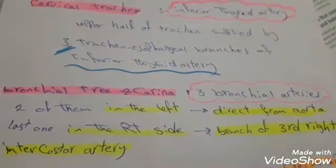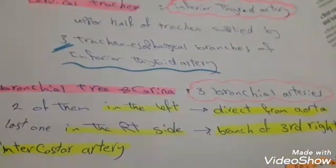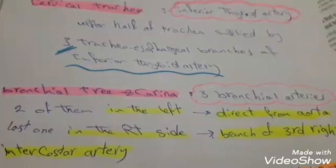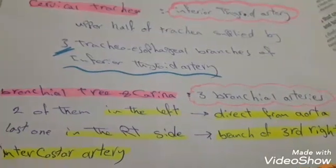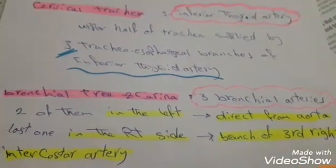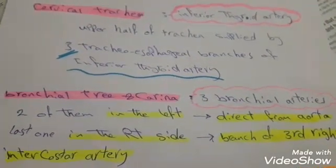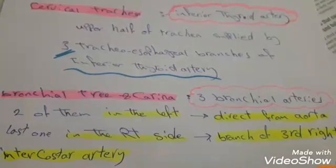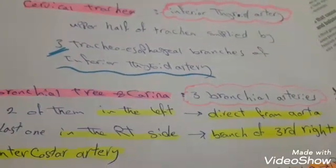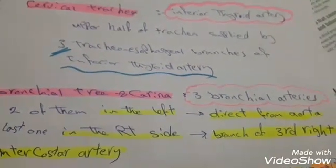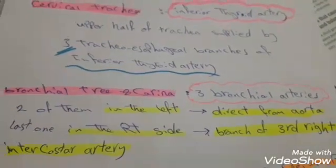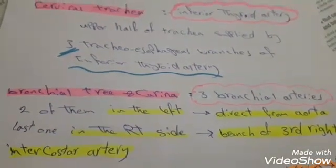The bronchial tree and carina are supplied by three bronchial arteries. Two of them are on the left and come directly from the aorta. The last one is on the right side and is a branch of the third right intercostal artery.